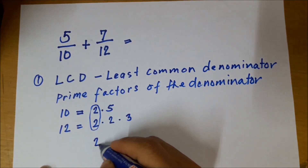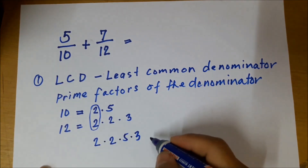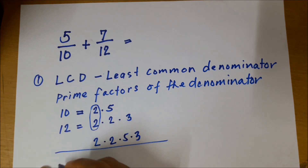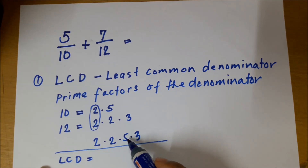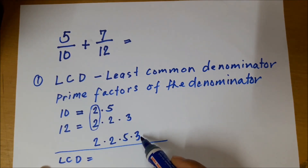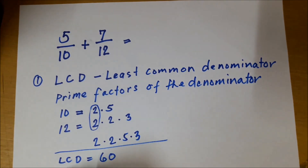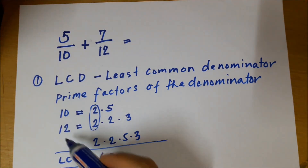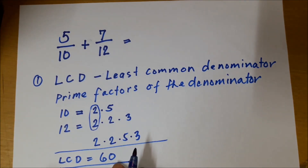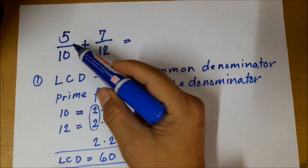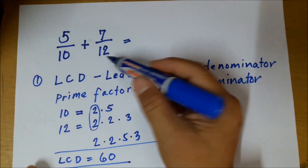Now we identify the common factors. These 2s are common, so we copy that 2, and here's another 2. The LCD is equal to 2 times 2 times 5 times 3: that's 4 times 5 which is 20, times 3 is 60. Therefore the LCD of 10 and 12 is 60, and we can now use 60 as the common denominator for the fractions 5/10 plus 7/12.